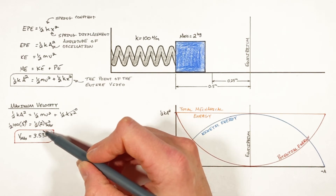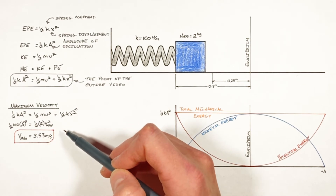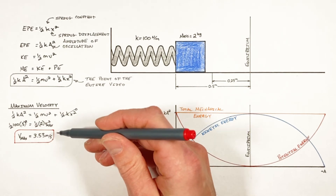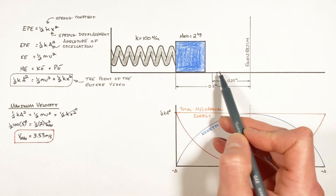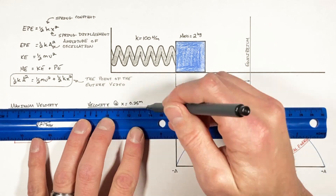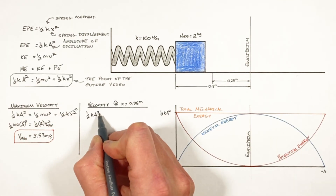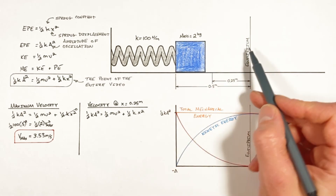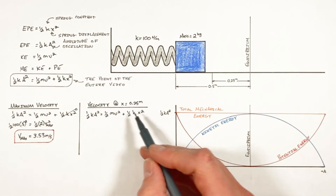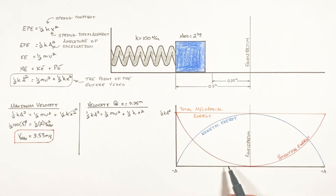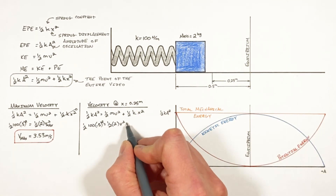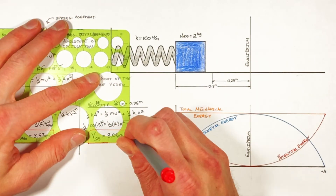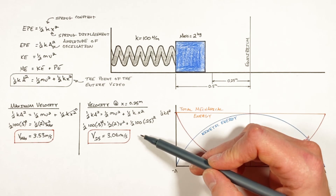The maximum velocity is 3.53 meters per second — take the significant figures as far as you'd like. Moving on to finding the velocity of the block once the spring is 0.25 meters away from equilibrium, we again use the same equation. This time, rather than the spring being fully relaxed at equilibrium, there is still some compression, so there is still some energy stored in the spring.